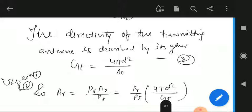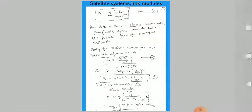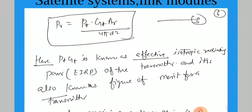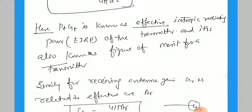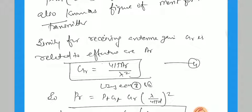AR is the received area and A0 is the initial total area. The power received by the receiver antenna is PR = PT × (AR / A0). The directivity of the transmitting antenna is described by its gain: GT = 4π d² / A0. This is the gain of the transmitting antenna of the satellite. Substituting values, we get AR = (PR × A0) / PT, and ultimately PR = (PT × GT × AR) / (4π d²). Here PT × GT is known as the Effective Isotropic Radiated Power (EIRP) of the transmitter, also known as the figure of merit for the transmitter, indicating how much effective power is transmitted by the satellite.